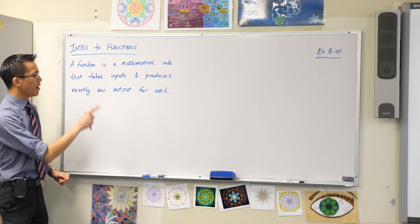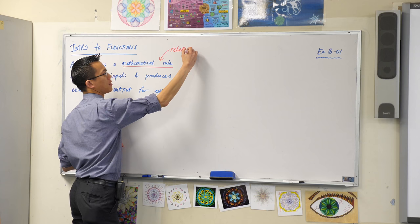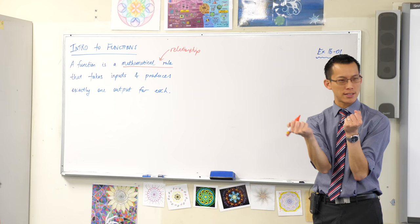The first is this idea of a mathematical rule. You've actually seen these kinds of things before. We would substitute the word relationship in here where you've got two quantities, two values, and they are tied to each other in some particular way. I'm going to give you some examples of this in a minute.